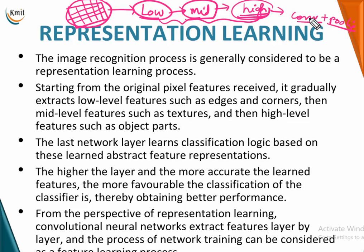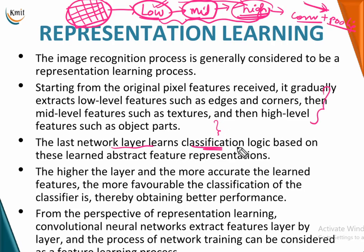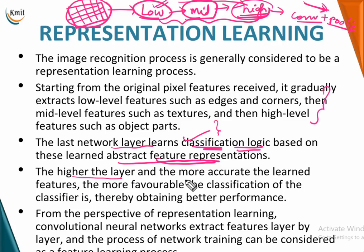As you down-sample further and reduce the spatial dimensions by adding more convolution and pooling layers, you move from extracting low-level features towards high-level features. This exact process is called representation learning. The last network layer performs the classification logic based on these abstract features.